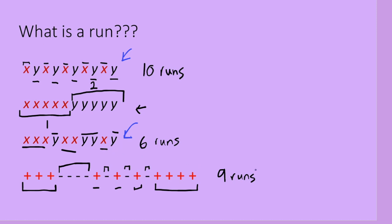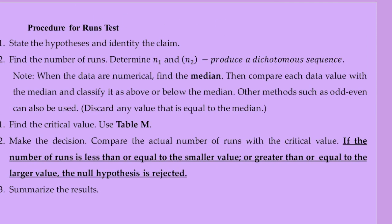Now let's look at the procedure for conducting the RUNS test. First, you need to state the hypothesis and identify the claim. Second, find the number of RUNS. When the data are numerical, we will find the median and then compare each data value with the median and classify it as above or below the median. Then we will find the critical value using Table M and make a decision.